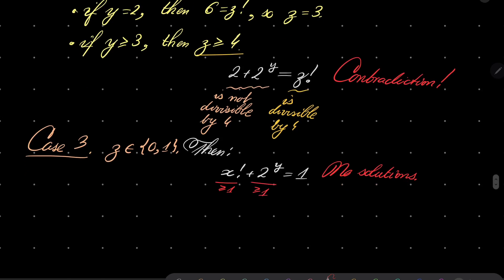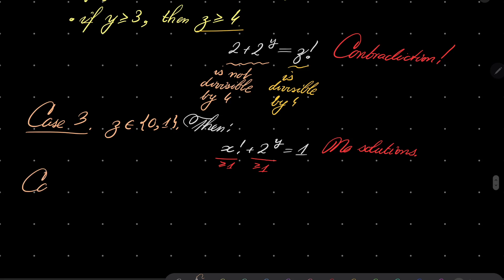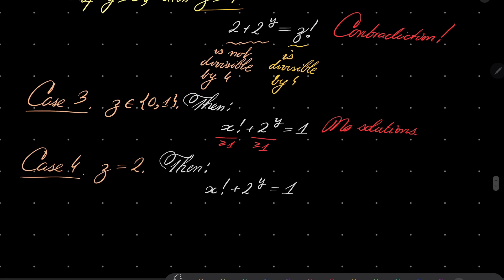In the final case, case number 4 and final, where z equals 2, notice that if z equals 2, then x factorial plus 2 to the power of y equals 2, and the only possibility for this to be satisfied is that x is 0 or 1, and y is 0.